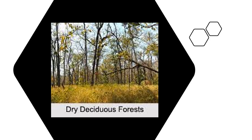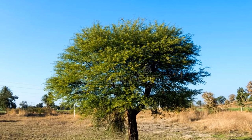In the drier regions, especially parts of Uttar Pradesh and eastern Rajasthan, where the rainfall is about 50 to 100 cm, the vegetation becomes slightly dry. Here we normally find the Babool tree, which is a drier kind of tree of the Acacia variety.